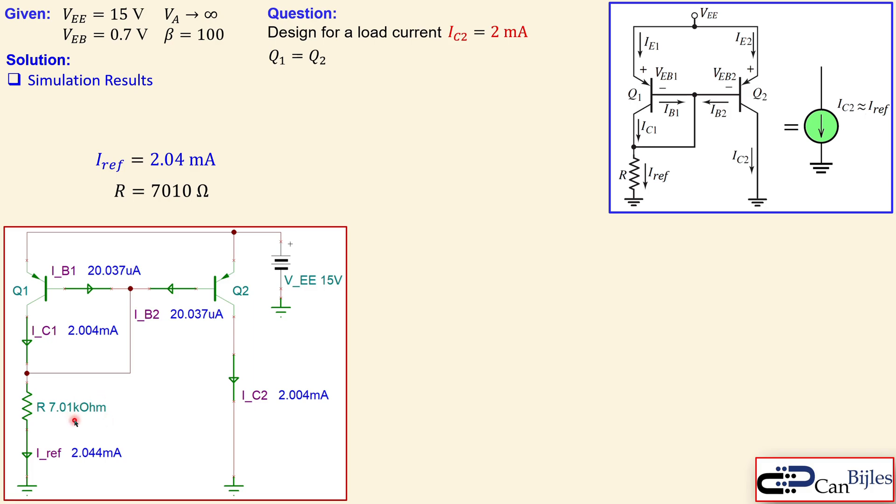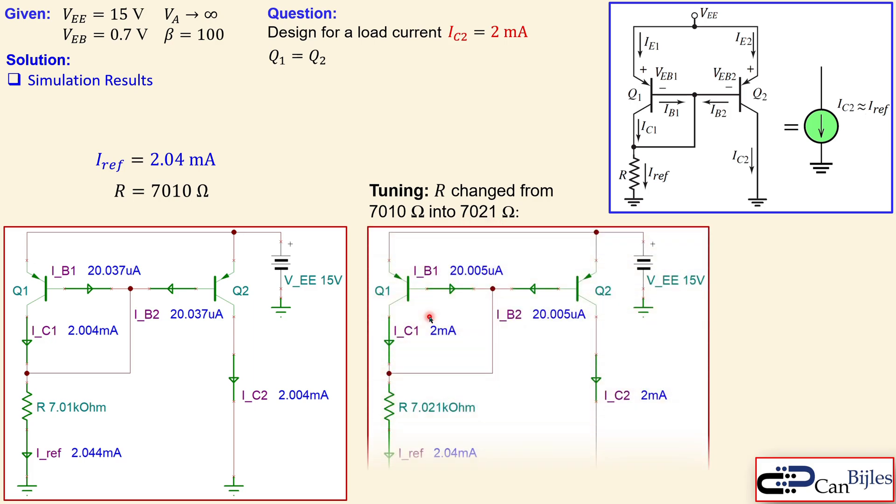You can say let's go up a little bit a tiny hair larger. So I did that and I tuned actual R from 7010 ohms to 7021. So 11 ohms up. And then I got this result.